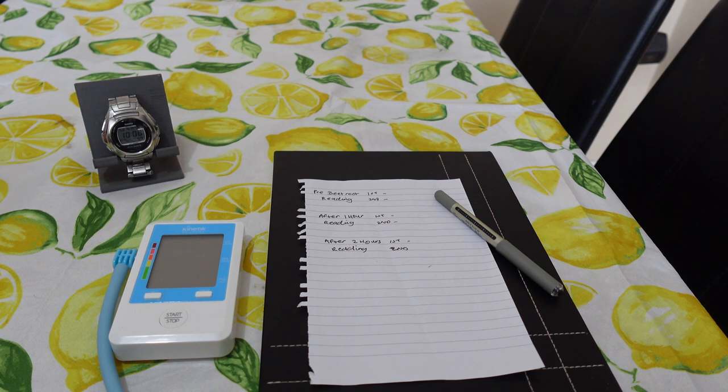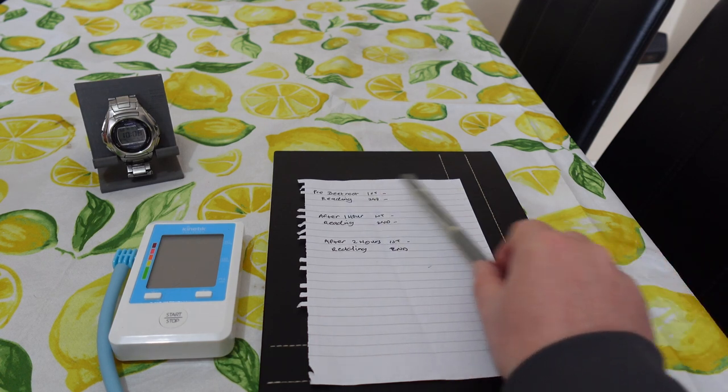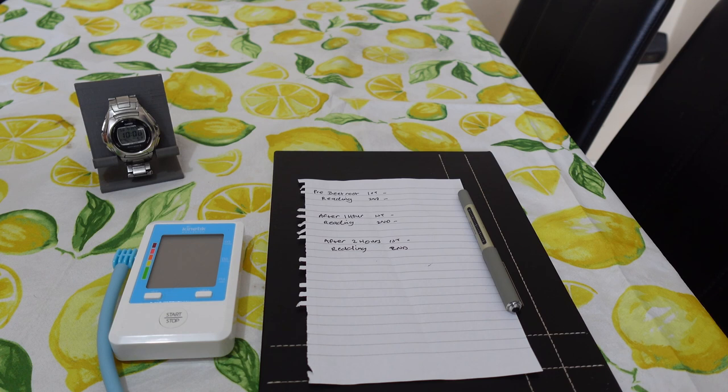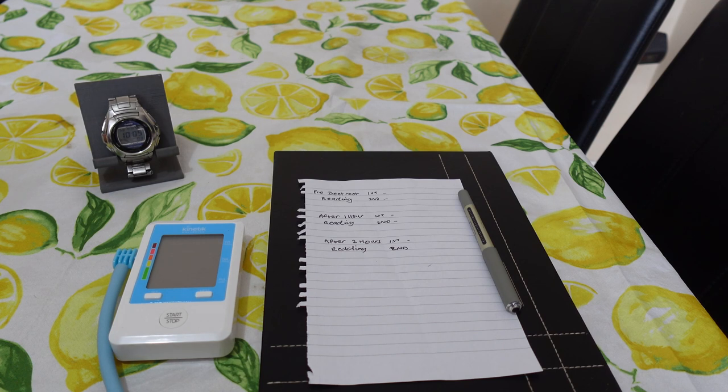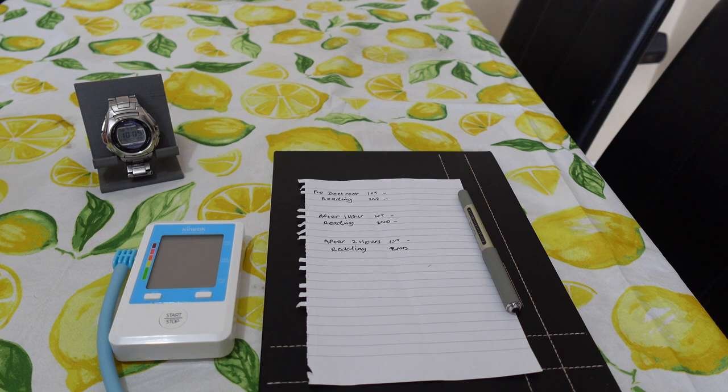So first of all I'm going to take off my base reading before drinking my beetroot juice, get a base measurement for my blood pressure, then I'm going to drink the beetroot juice, wait an hour and take it again. I might even do a second reading after two hours or maybe even after three, but we'll see what happens.